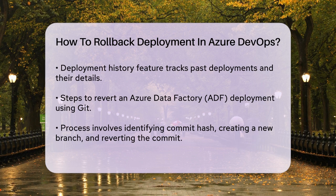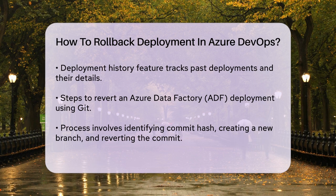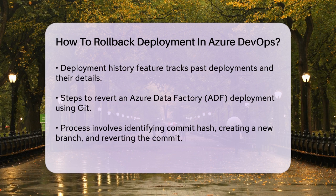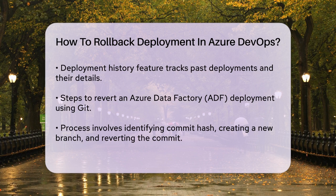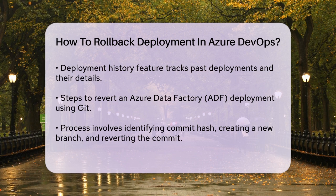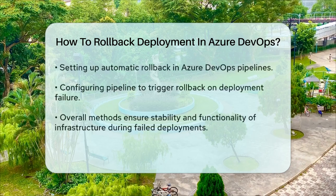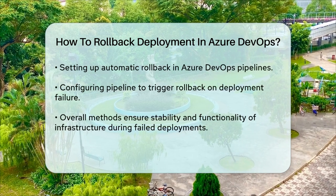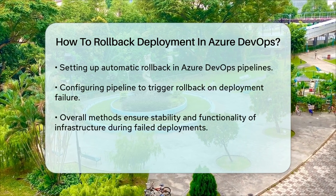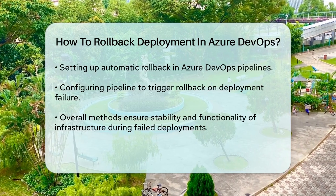To revert an Azure Data Factory (ADF) deployment specifically, you would follow these steps: identify the commit hash of the previous version you want to revert to, create a new branch from the main branch in your Git repository, revert the commit in the new branch, push the new branch, and then create a new release pipeline to deploy the new branch to your ADF instance. This process essentially undoes the changes made in the previous commit and restores the previous state of your pipeline.